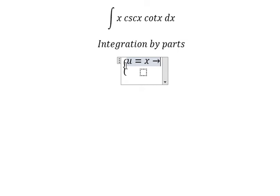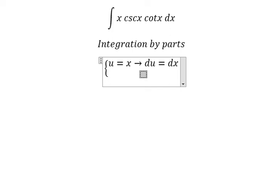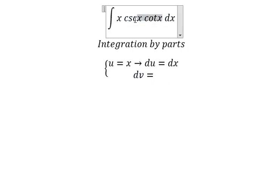Later we do first derivative for both sides, we have du equals to dx. For dv we have cosecant of x cotangent x.